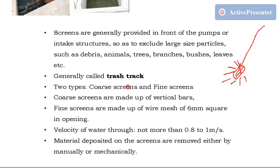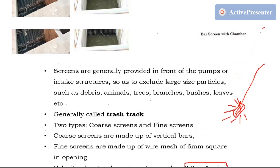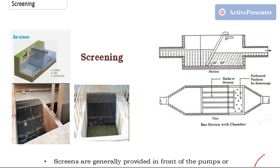There are two types of screens: coarse screens and fine screens. Coarse screens remove coarser material; fine screens remove finer material. Coarse screens are made of vertical bars as shown, while fine screens are made of wire mesh — usually with a 6 mm square opening. In coarse screens there is a vertical opening, not square. The velocity of flow should not exceed 0.8 m/s as the water approaches the screen. Materials deposited on the screen are removed either manually or mechanically by continuously rotating the screens.